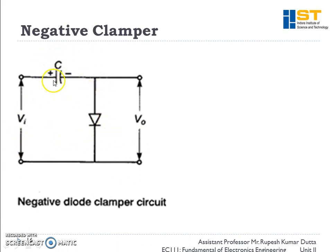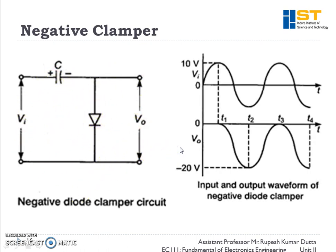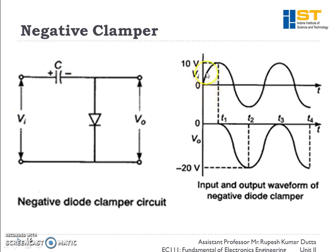This is the circuit of a negative clamper. In this circuit we have a capacitor and a diode — this is the simplest circuit of a clamper. To understand its working, let's assume we apply an input voltage to the capacitor. During the positive half cycle, the diode becomes short and the capacitor starts charging through this path, up to the maximum value of Vin. Assuming the maximum value is 10 volts, the capacitor will charge itself to 10 volts, and at the output terminal we have negative 10 volts.